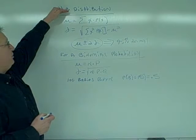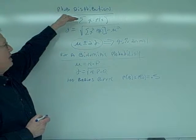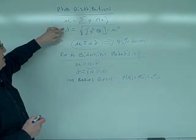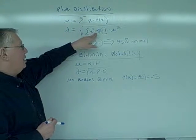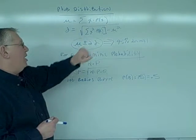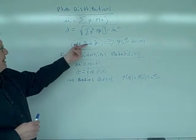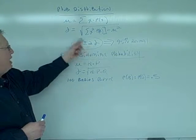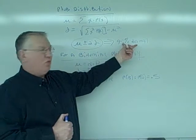Going back to our probability distribution, we have the mean is the sum of x times the probability of x. Standard deviation is the square root of x squared times the probability of x minus the mean squared. We had those ugly calculations. The mean plus and minus two standard deviations gave us our 95% normal range.